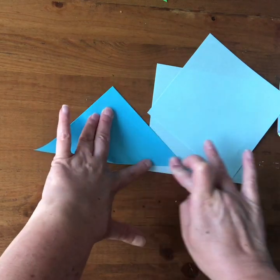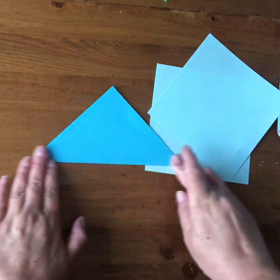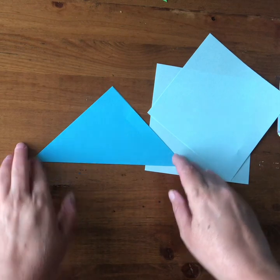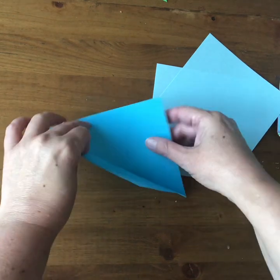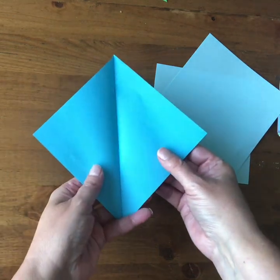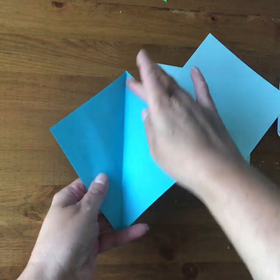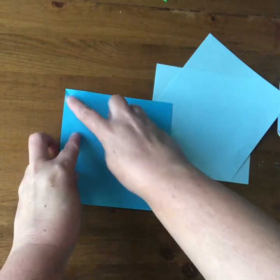And this is where you can use your fingers to crease that really well. Then when you open it up, you've decomposed your square into two triangles. And that's the diagonal line across your square.